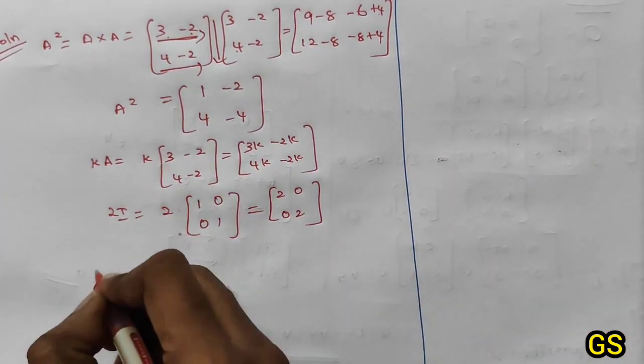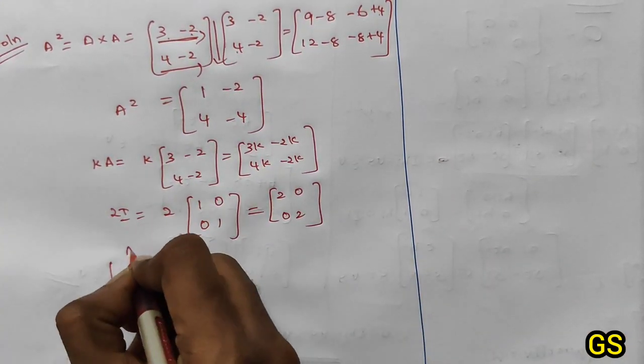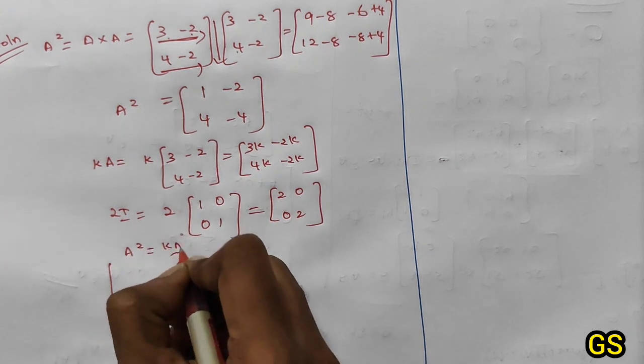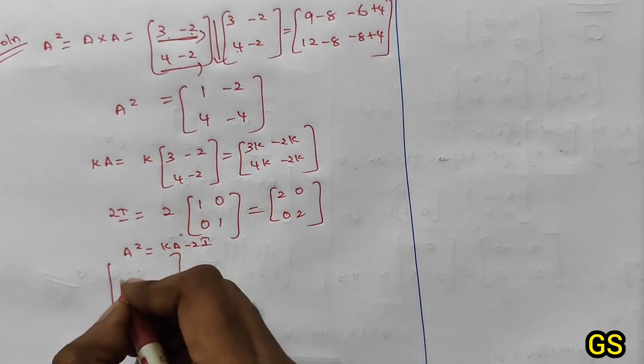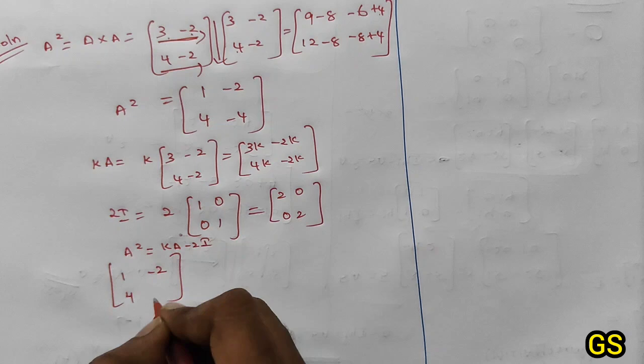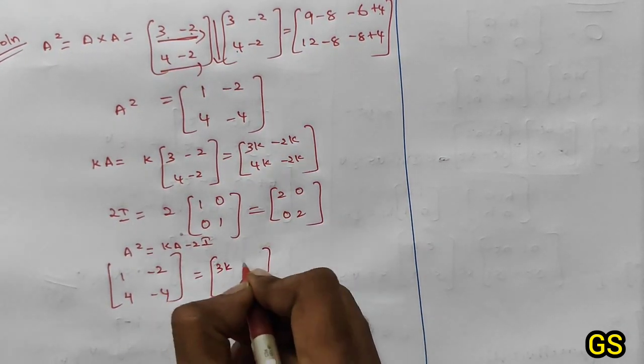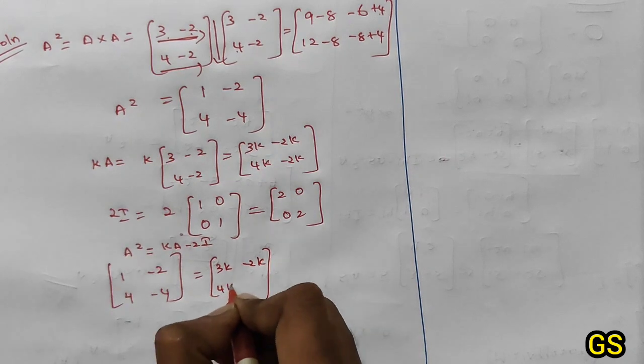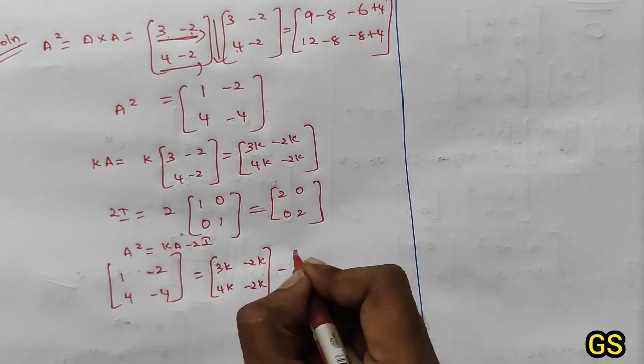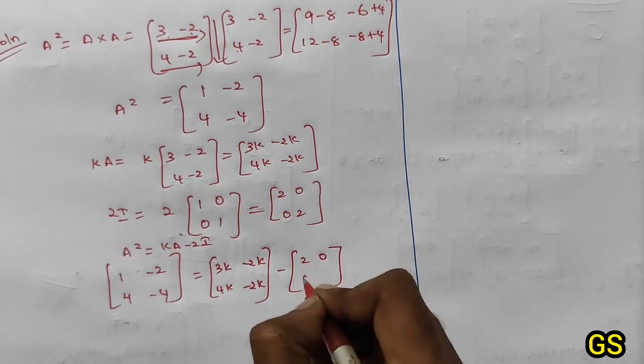A squared equals kA minus 2I. So A squared [1, -2; 4, -4] equals kA [3k, -2k; 4k, -2k] minus 2I [2, 0; 0, 2].